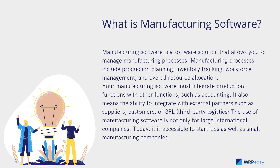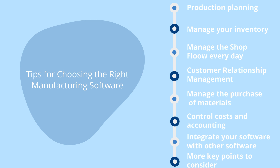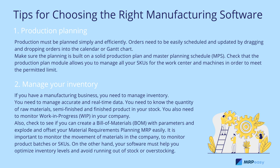Here are some considerations to keep in mind when choosing the right manufacturing software for your business: one, production planning; two, manage your inventory; three, manage the shop floor every day; four, customer relationship management (CRM); five, manage the purchase of materials; six, control costs and accounting; seven, integrate your software with other software; eight, more key points to consider. Let's take a closer look at tips to help you make your investment more efficient.